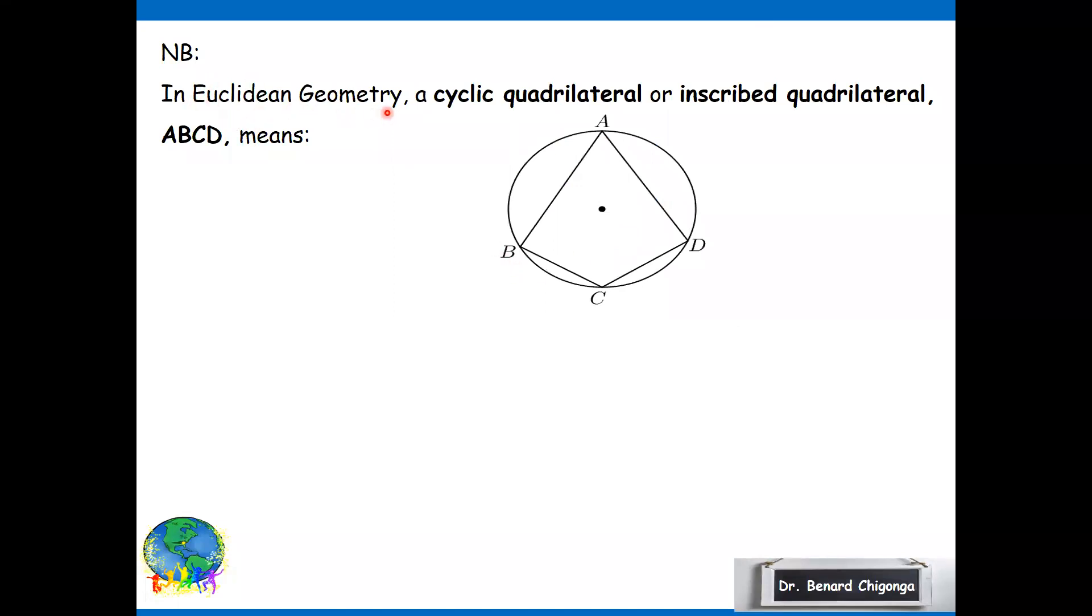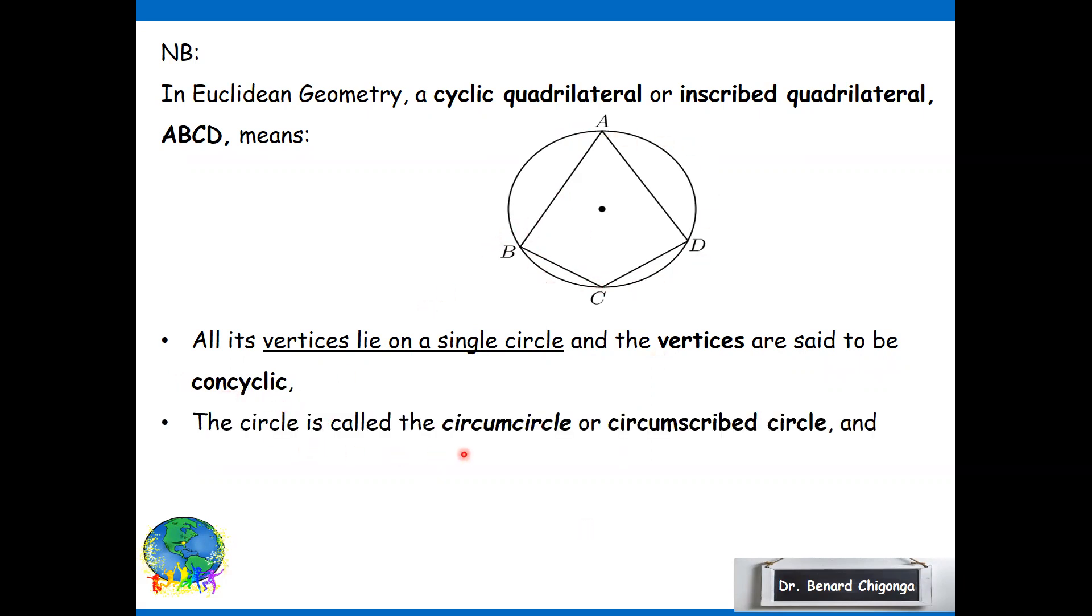Let us note that in Euclidean geometry, a cyclic quadrilateral or inscribed quadrilateral ABCD in this diagram means all its vertices lie on a single circle and the vertices are said to be cyclic. So A, B, C, D are concyclic because they lie on the circumference. The circle is called the circumcircle or circumscribed circle, and the center of the circle and its radius are called the circumcenter and the circumradius respectively.